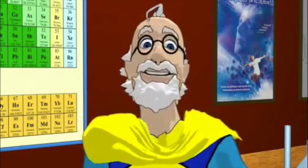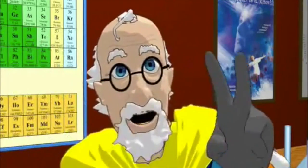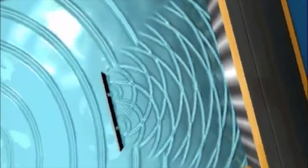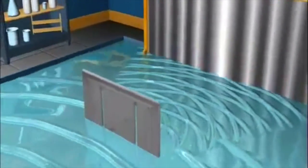So, when we throw things, that is matter, through two slits, we get this: two bands of hits. And with waves, we get an interference pattern of many bands.